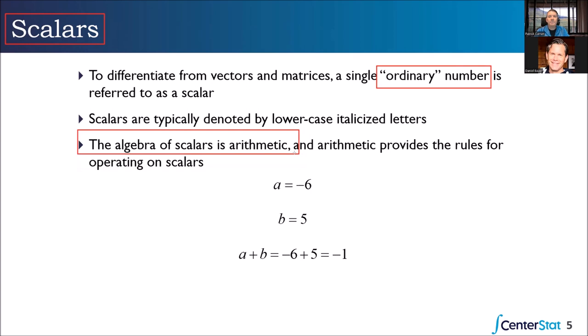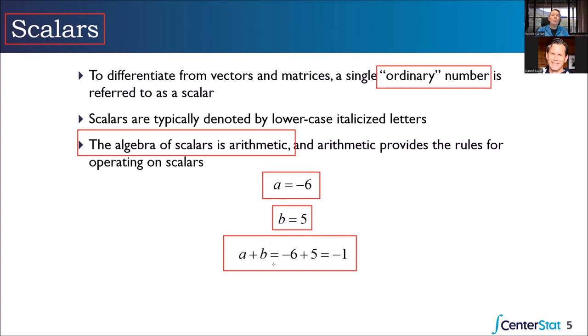The algebra of scalars is just arithmetic. If lowercase italic a is negative six and lowercase italic b is five, then a plus b is negative six plus five, which is negative one. We denote scalars with lowercase italic — it's arbitrary, we just all agree on it.